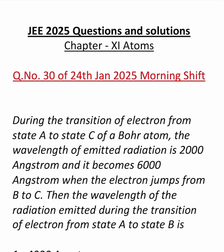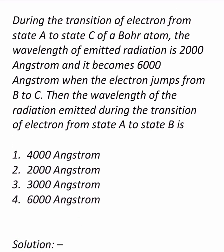Hello everyone. Let us see one more problem from JEE 2025, from the chapter Atoms — question number 30 of the 24th January morning shift. During the transition of an electron from state A to state C of a Bohr atom, the wavelength of emitted radiation is 2000 angstroms, and it becomes 6000 angstroms when the electron jumps from B to C. We need to find the wavelength emitted during the transition from state A to state B, selecting from four given options.